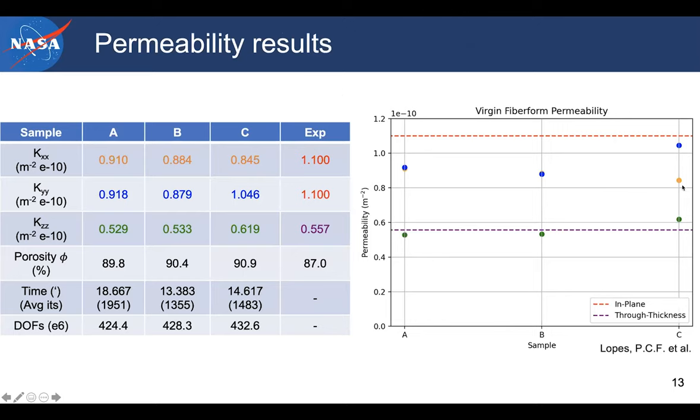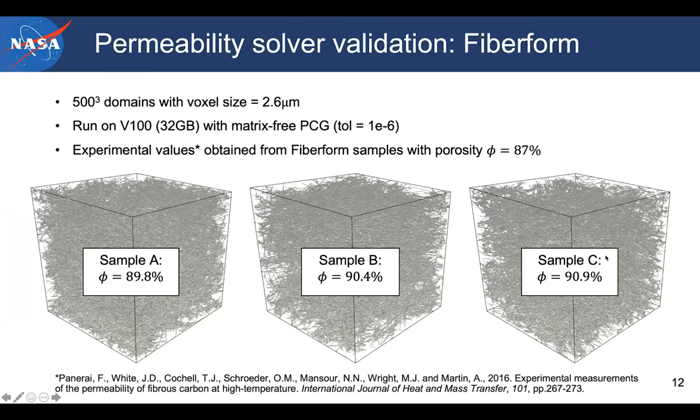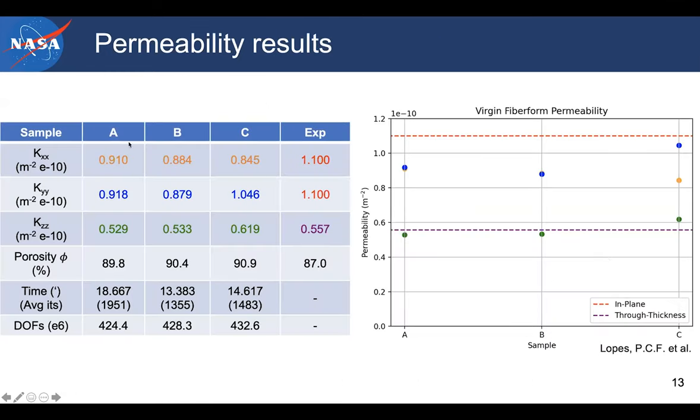So I'll jump into the permeability results. And here I also want to reference my colleague at UFF Lopez, who also helped with these runs. This was run on the cluster at NASA using a CUDA kernel. And then these are basically the three permeabilities that are obtained for the three samples A, B, C, referencing the three domains that we had in the first slide. And specifically we have in-plane and through-thickness permeability coming from the experimental values, which are the red and purple curves. And as you can see the three samples for the in-plane on the top and through-thickness on the bottom show a pretty interesting trend which somewhat matches the experiments.